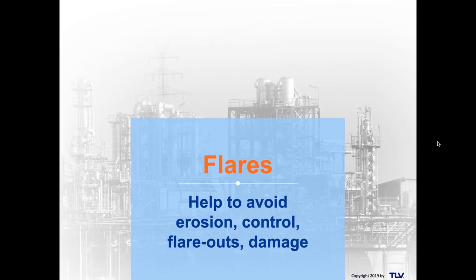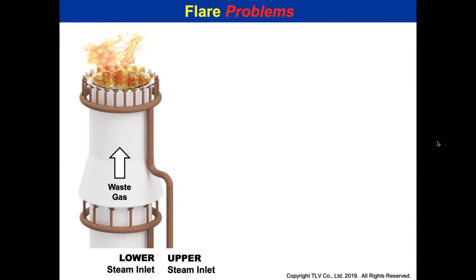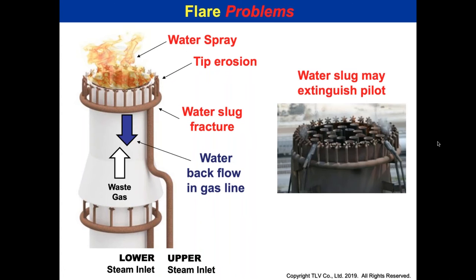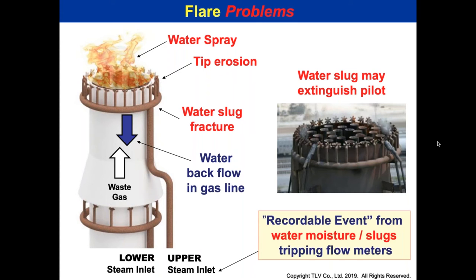We want to help avoid erosion of flare tips, control issues, flare-outs, and flare damage. Problems we've seen include tip erosion, slug fracture, backflow, extinguishing the pilot, water spray coming out — we've used drones and you can see it looks like a water fountain. Recordable events from water, moisture, or slugs tripping flow meters can cost $35,000–$40,000 per event, but they can be avoided. Flares and coker systems are usually far away, but you have to pay attention to those utility lines — they are critical.